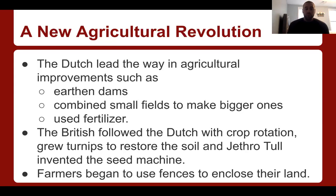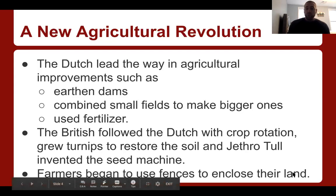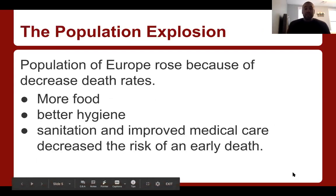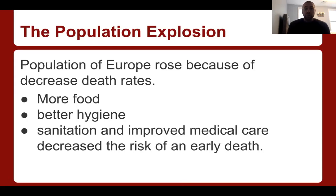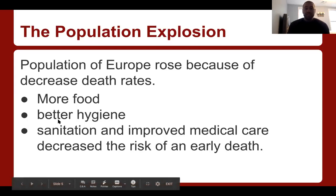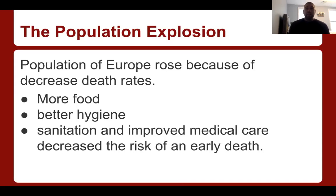There's more food for people to eat, which means theoretically less people will die of starvation and less people will be hungry. Farmers began to use fences to enclose their land. This leads to a population explosion — the population of Europe rose because of the decrease in death rates. There's more food, better hygiene and sanitation, and improved medical care decreased the risk of an early death. When we talked about the French Revolution, the death rate for the lower class, the third estate, was very high — many of them didn't even make it to 15 years old.